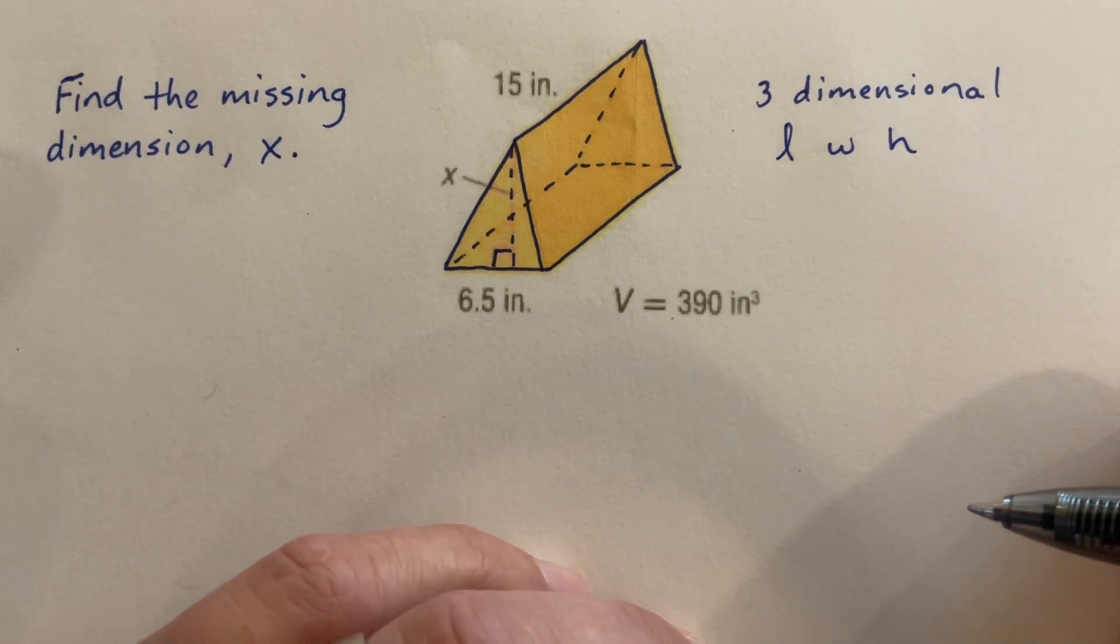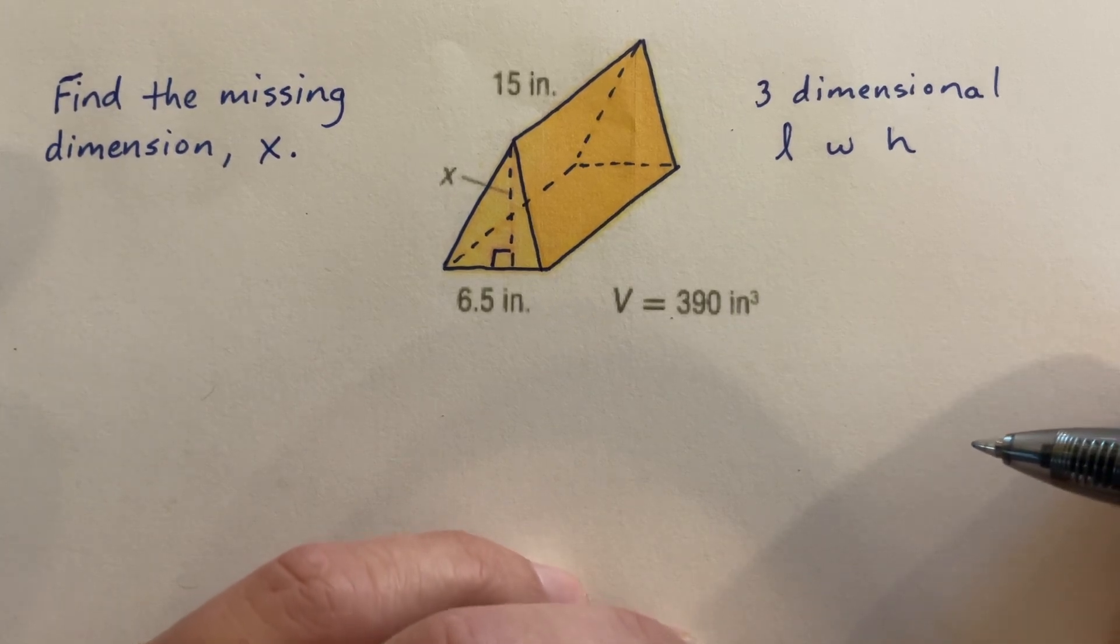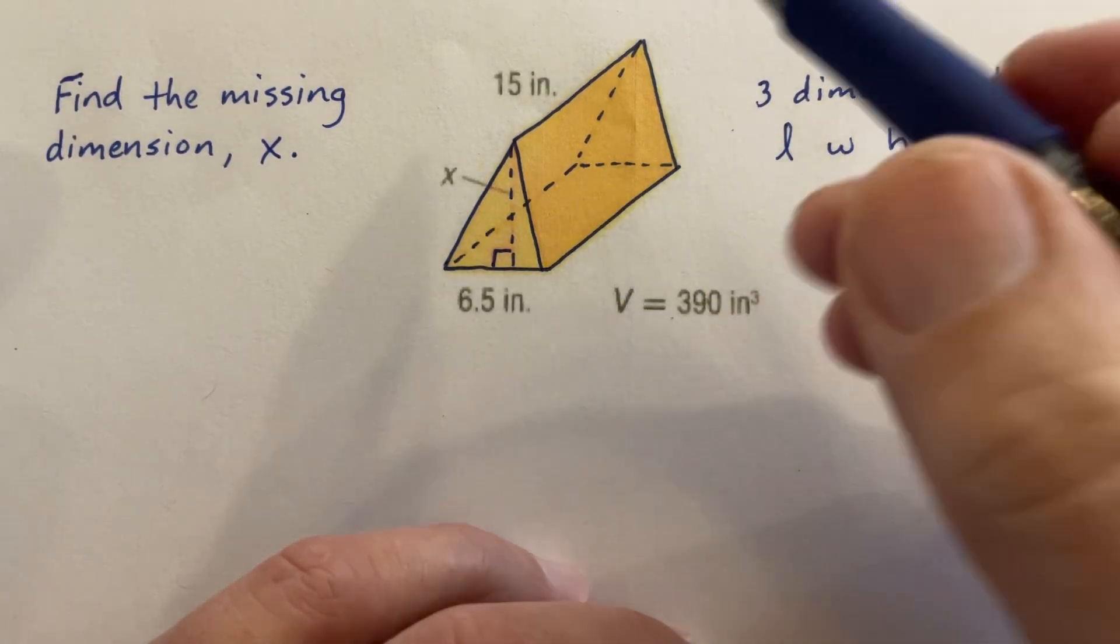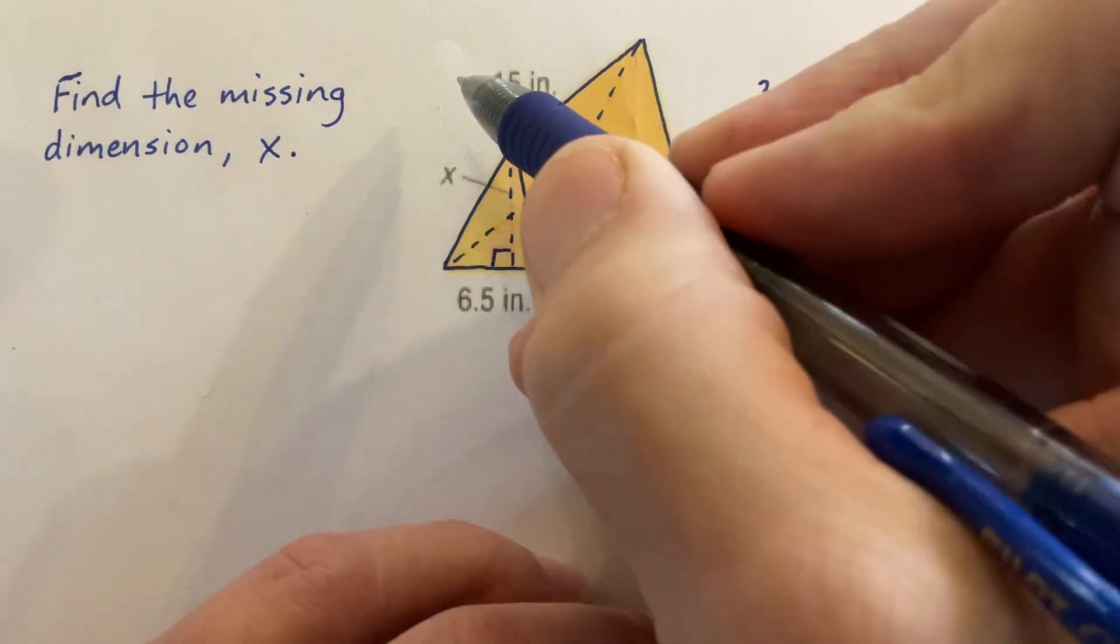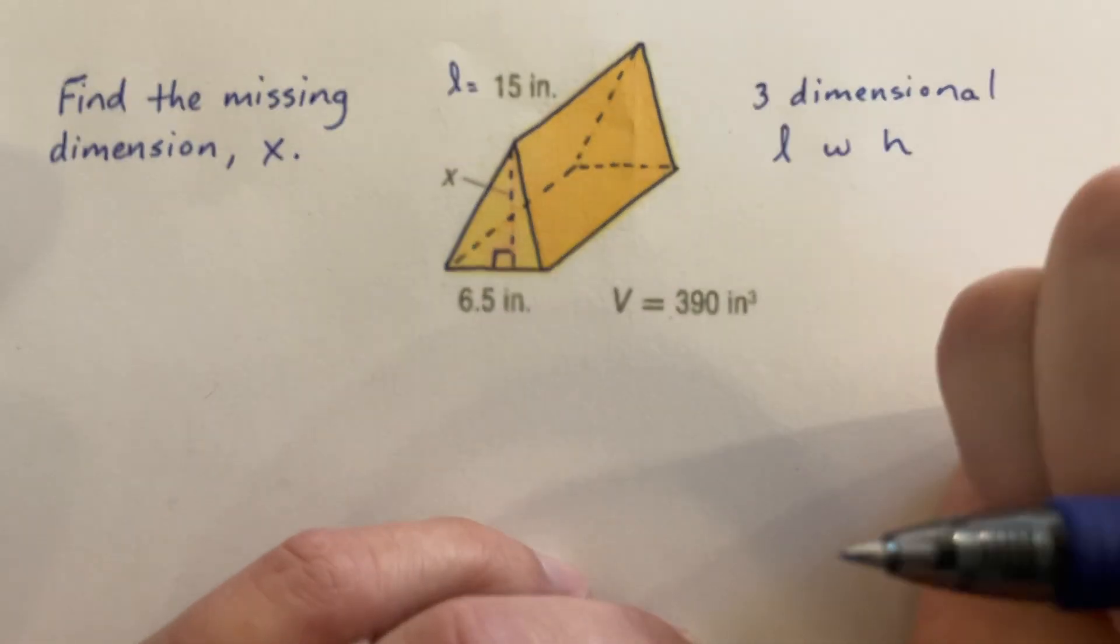Before you can really get into this problem, you have to identify which measurements are which. We have a triangular prism here, and the length is the long side, so this 15 inches here is the length. So I'm going to put L equals 15 inches.